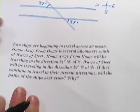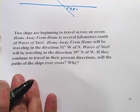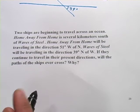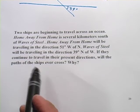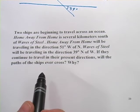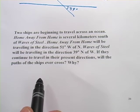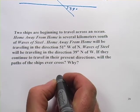All right, let's look at one more. This one says, two ships are beginning to travel across an ocean. Home Away From Home is several kilometers south of Waves of Steel.